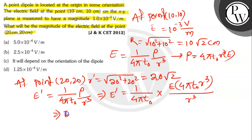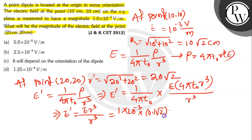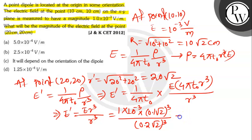So E' = E × R³ / R'³ = 1×10⁻³ × (0.1√2)³ / (0.2√2)³, which equals 1.25×10⁻⁴ V/m. Option D is the right answer. Thank you.